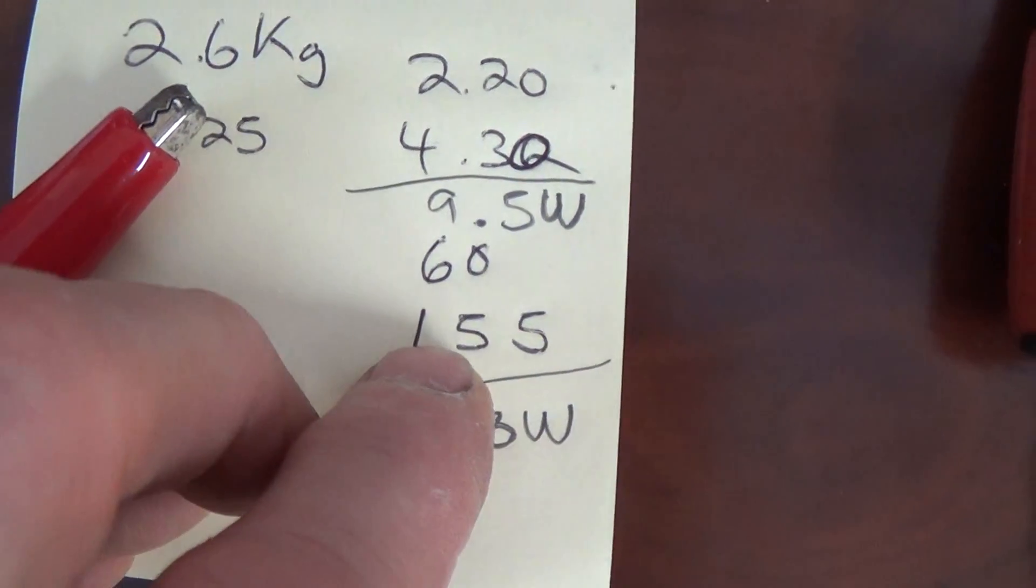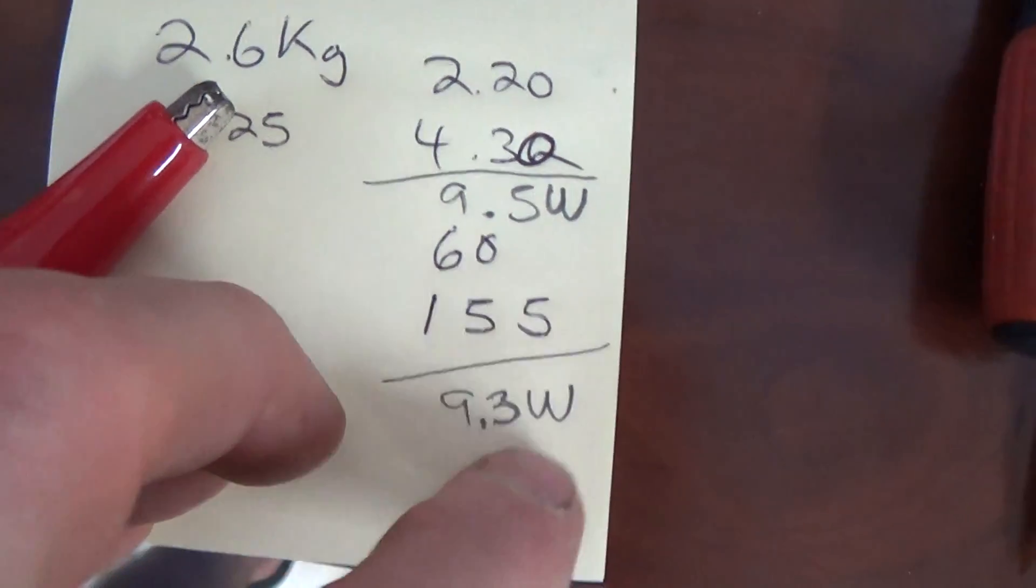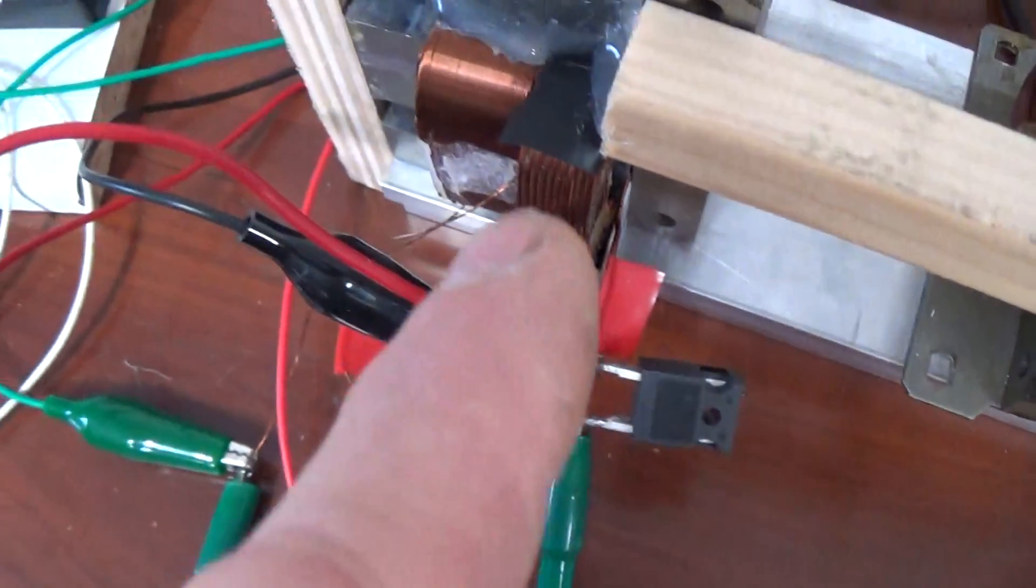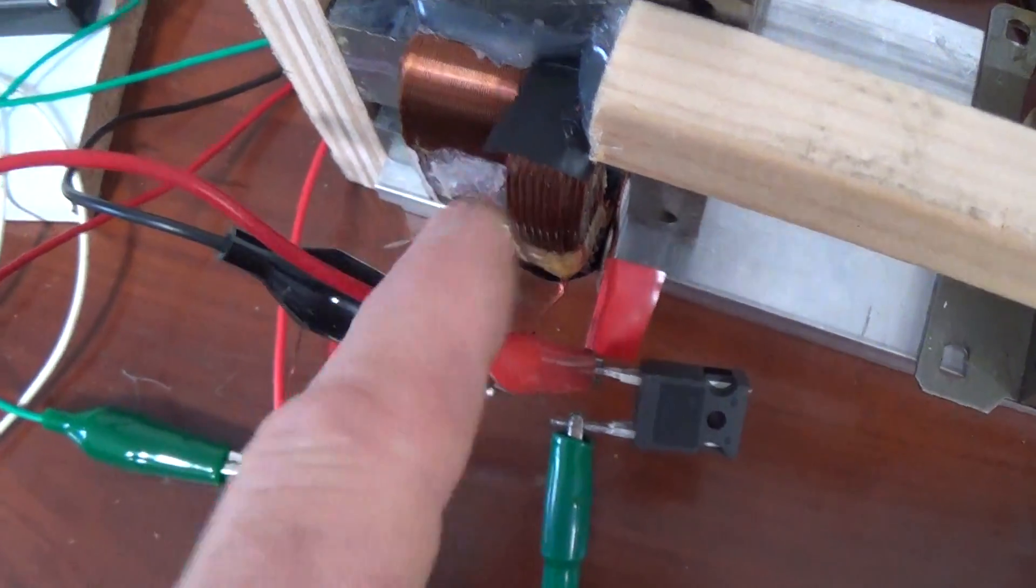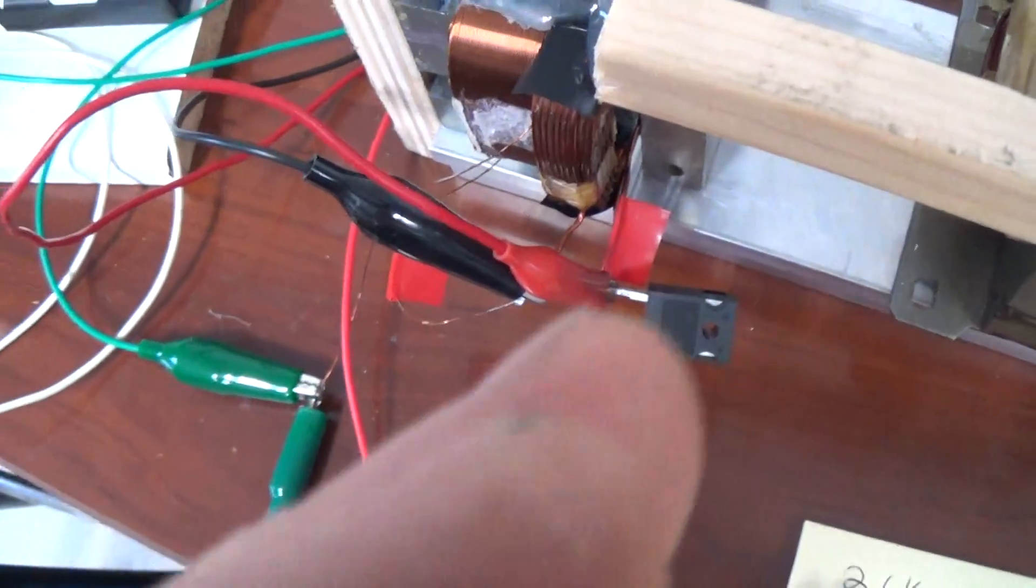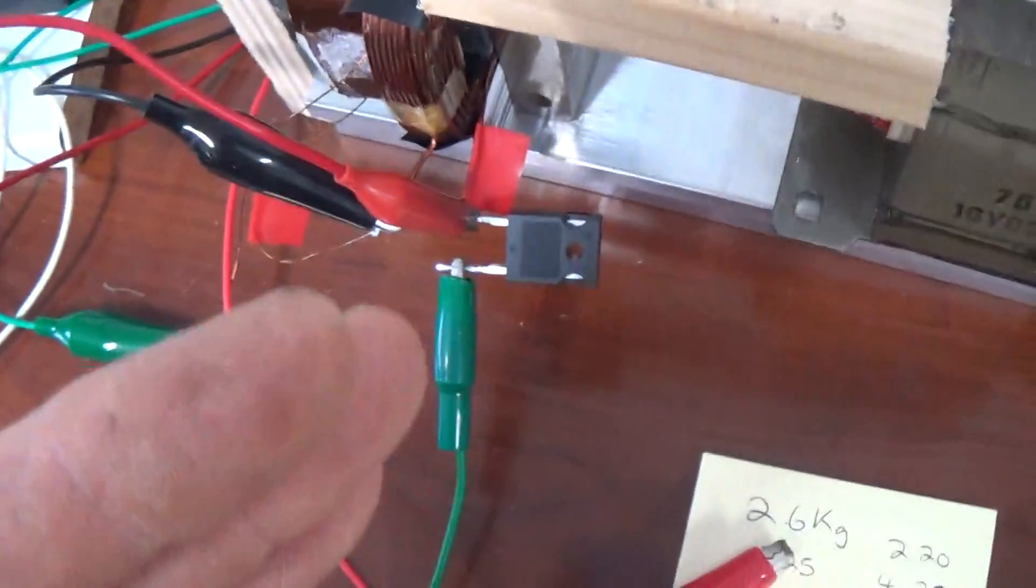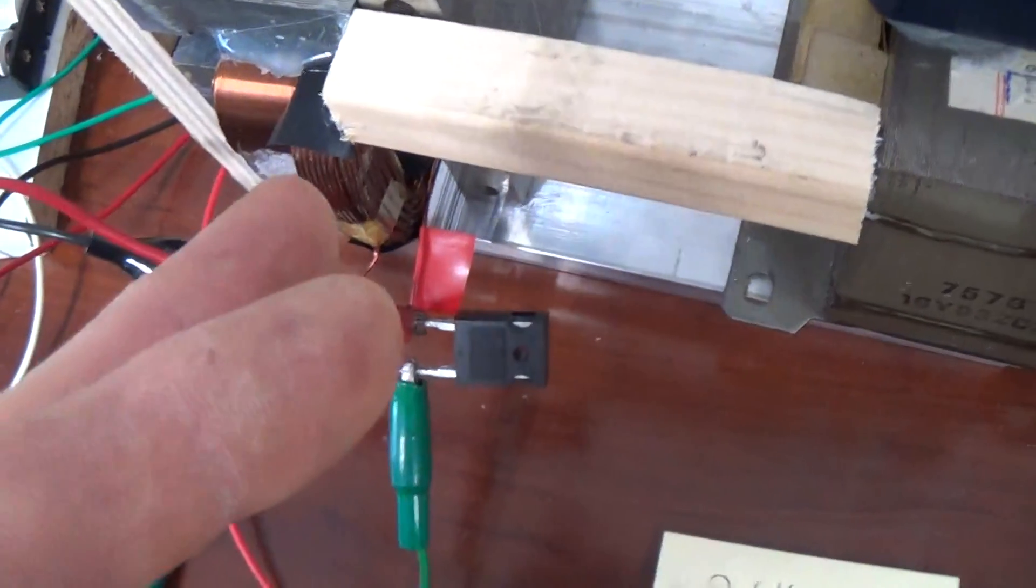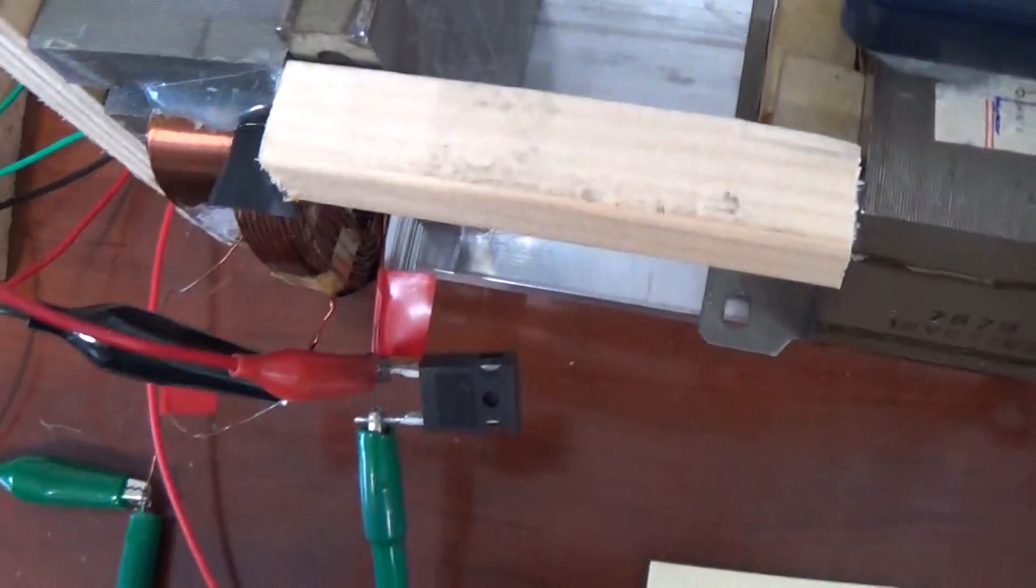So there you go, 60 volts at 155 milliamps is 9.3 watts. But keep in mind, again, we've got 93 ohms of DC resistance here. So there really is something interesting happening. And this shouldn't be, we shouldn't be able to get that extra amount of work with all that DC resistance.